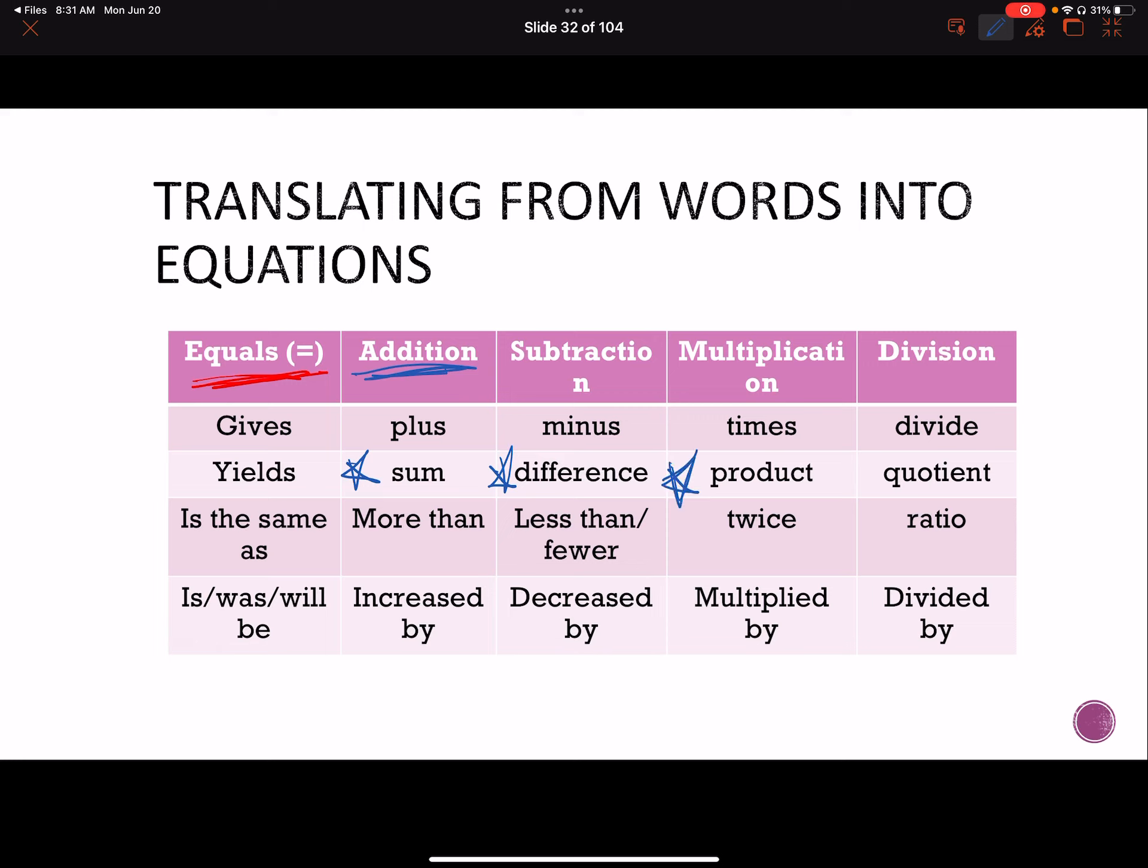For multiplication, we call that the product. If we're multiplying two numbers, we're finding the product. And for division, we could say ratio. We could just blatantly say divide, but the one that kind of throws people sometimes is quotient. When I'm dividing two numbers, I'm asking you to find the quotient.